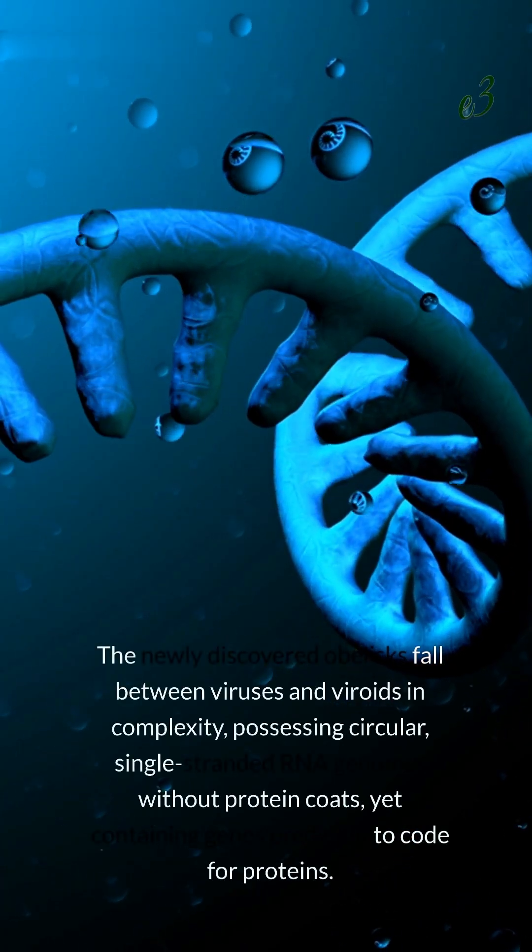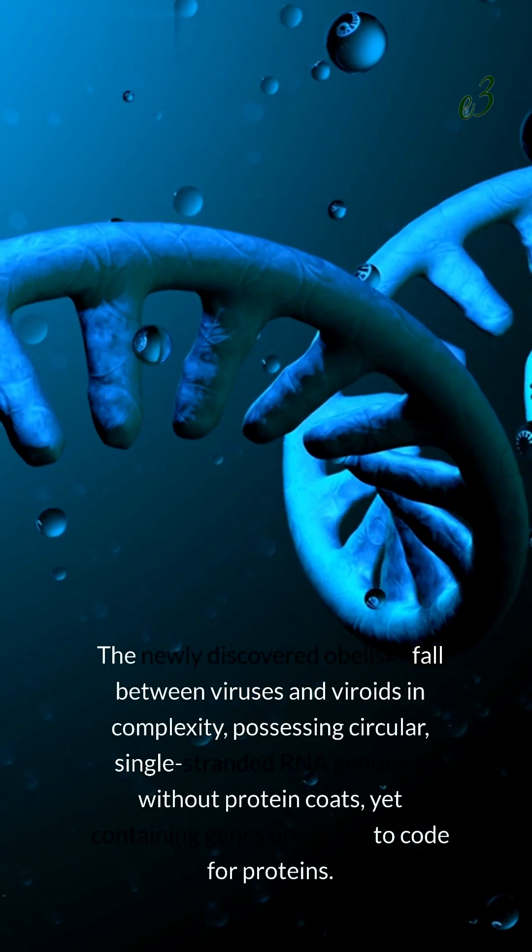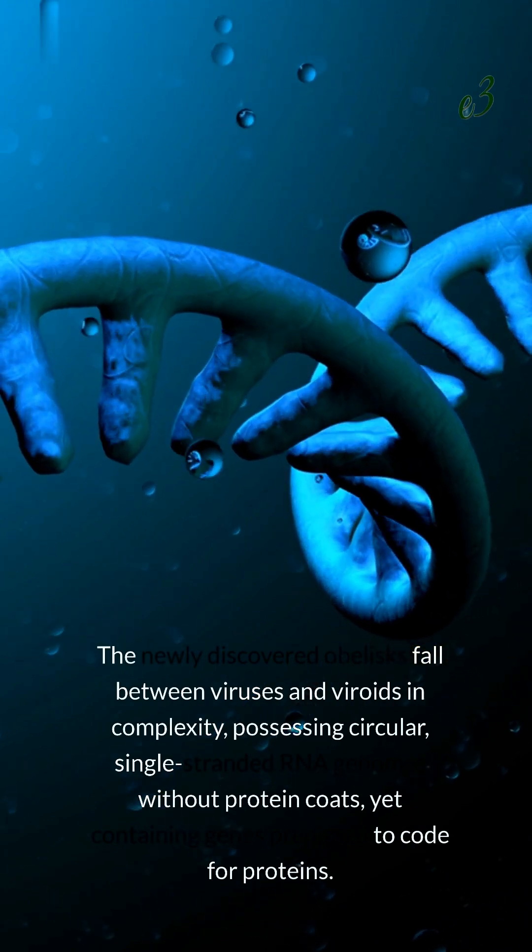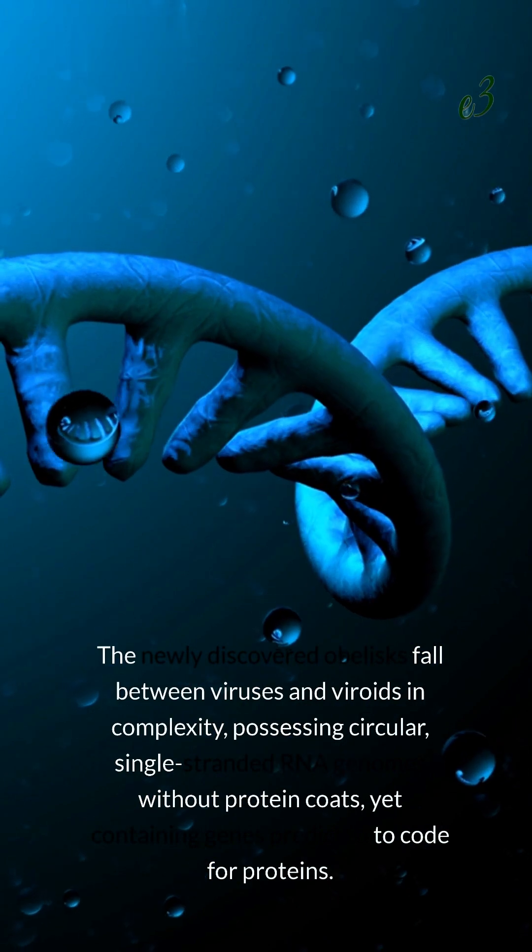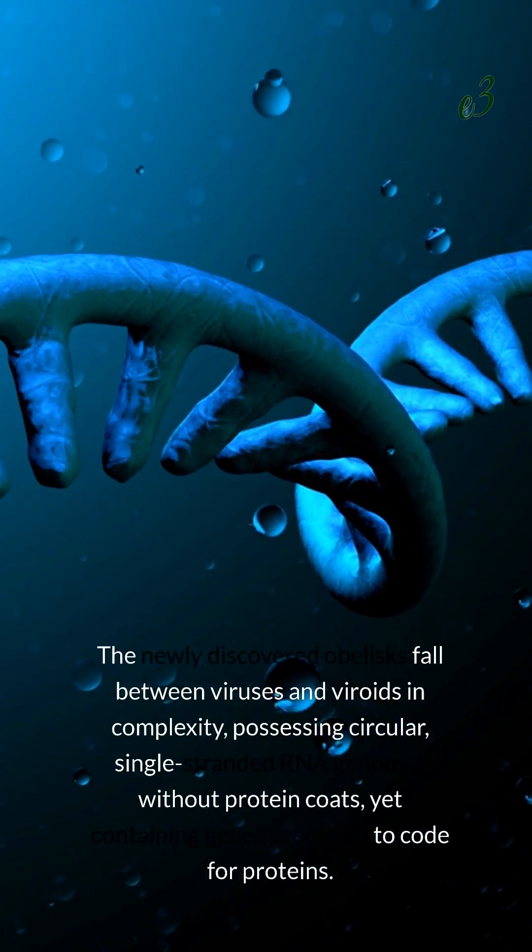The newly discovered obelisks fall between viruses and viroids in complexity, possessing circular, single-stranded RNA genomes without protein codes, yet containing genes predicted to code for proteins.